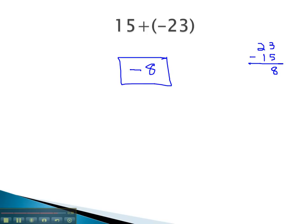The way we add numbers with different signs is we subtract the numbers and use the sign of the larger absolute value.